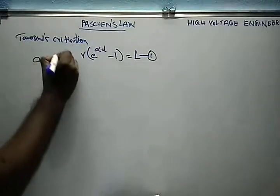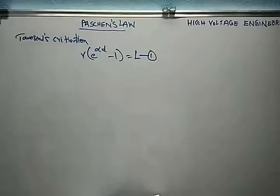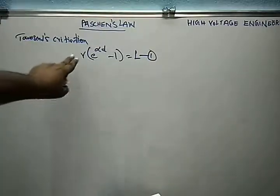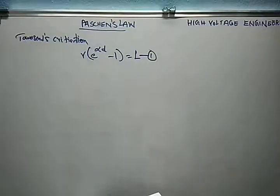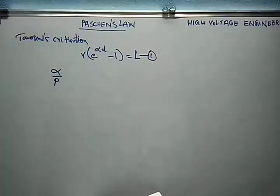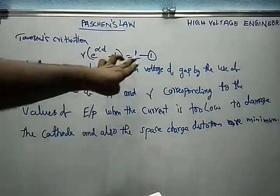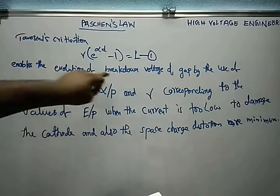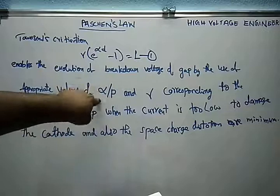Here we state that alpha is directly proportional to E/p. So we are going to consider that again. The criterion γ(e^(αd) − 1) = 1 enables evaluation of breakdown voltage of the gap by use of the appropriate values of alpha/p, corresponding to the values of electrical field and pressure, when the current is too low to damage the cathode and the space charge is at a minimum.